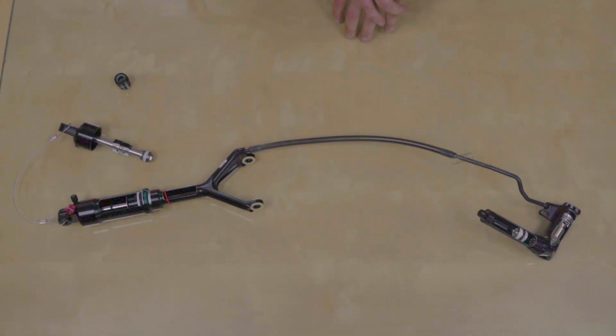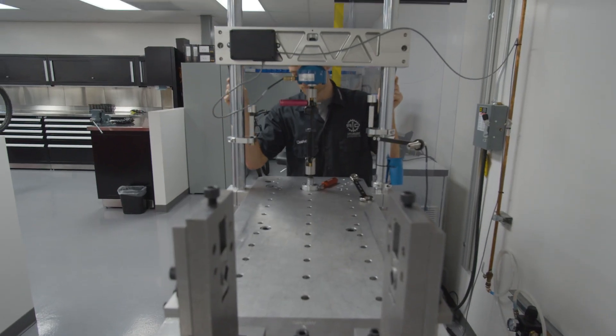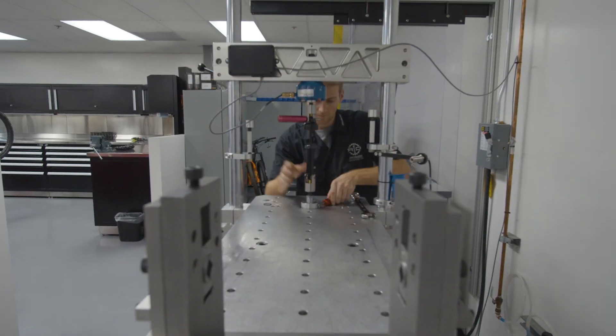So moving away from the damper side of things, that takes care of the damping control. On the air spring, we saw some changes as well. We've actually gone away from auto sag, like we have on a lot of the trail bikes.